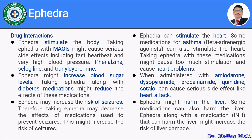Ephedra with antidiabetic medications: ephedra may increase blood sugar levels, and combining it with antidiabetic medications like insulin may reduce their effectiveness. One should not combine ephedra with antidiabetic medication. Additionally, one of the side effects of ephedra is risk of seizures, so combining ephedra with anticonvulsants like carbamazepine, phenytoin, valproic acid, or phenobarbital may increase the risk of seizures.